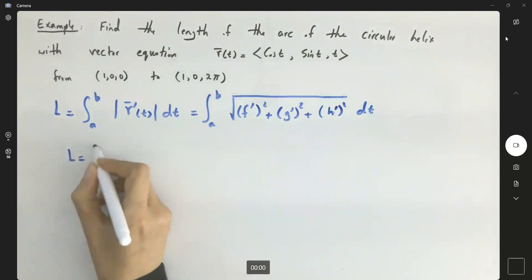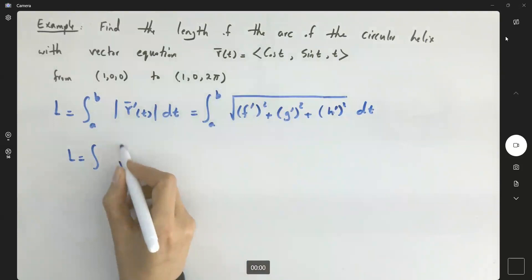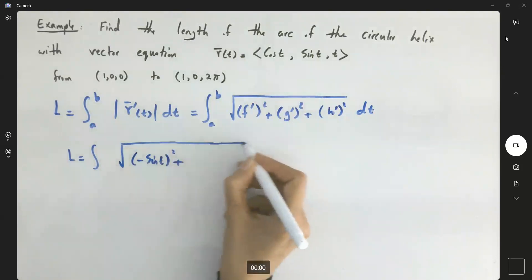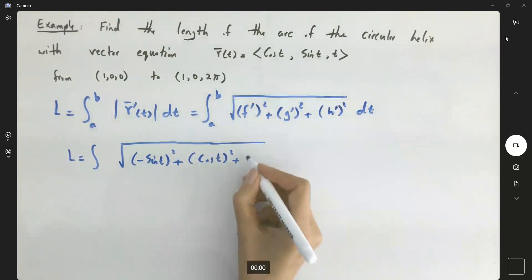So it's equal to the integral, taking the derivatives: we have the integral of cosine prime, which is negative sine, to the second, plus the derivative of the second component is cosine to the second, and then you have the derivative of t to the second, which is one to the second, dt.